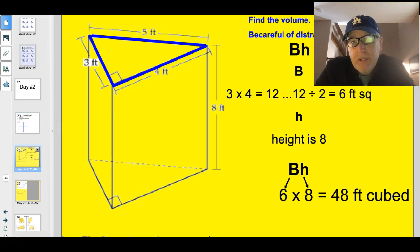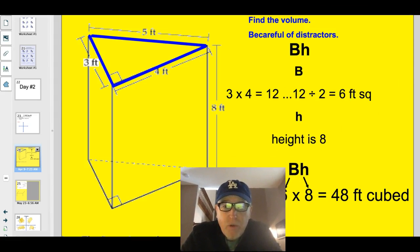You need to be careful when you're finding the volume of prisms to ignore the distractors. On this triangular prism, a lot of kids want to take and multiply all three of these numbers together. No, find the base. The base is 3 or 4, depending upon how you are viewing the triangle. But base times height is right here. This is the hypotenuse, so the long side of the triangle. We don't need that to find the area of the triangle.